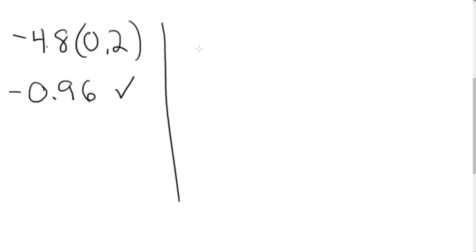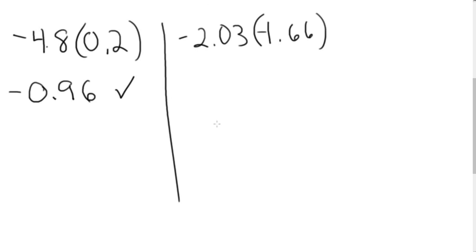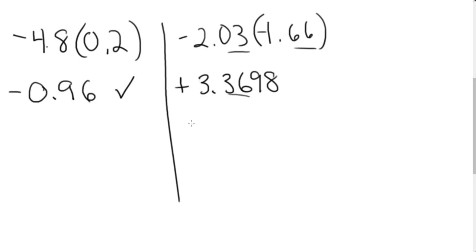Try this one: pause the video. I have negative 2.03 times negative 1.66. If your thought process was — I have a negative times a negative, so when I have the same signs my answer is positive when multiplying. Using the calculator, that gives me 3.3698. Rounding to two decimal places because I had two digits on each factor, the answer is 3.37.